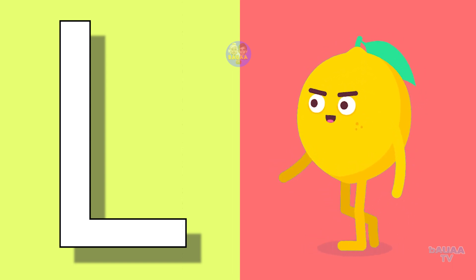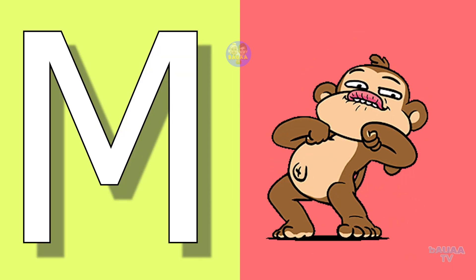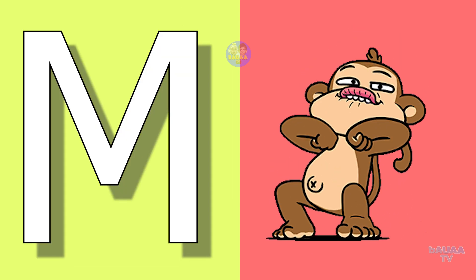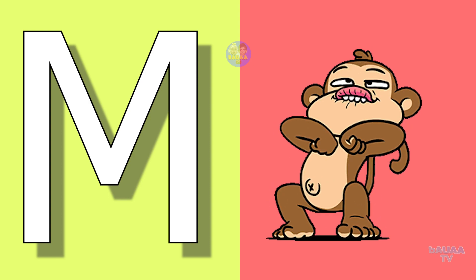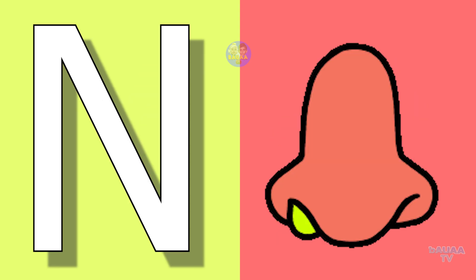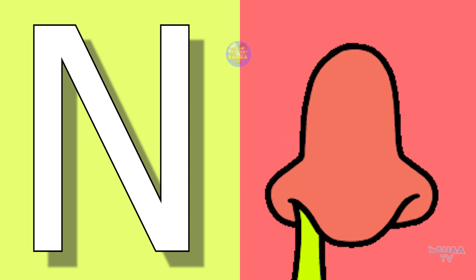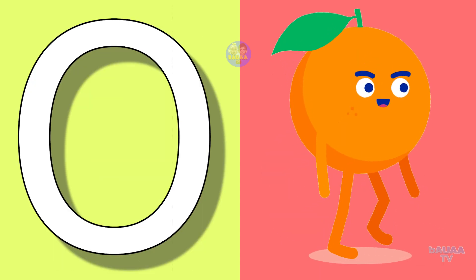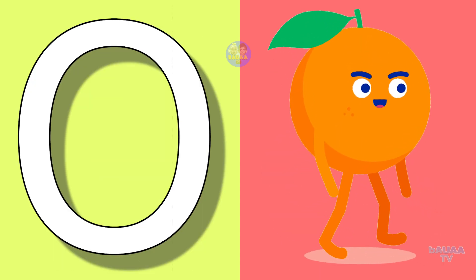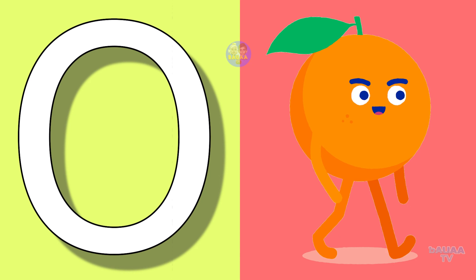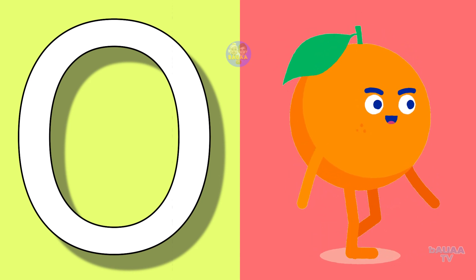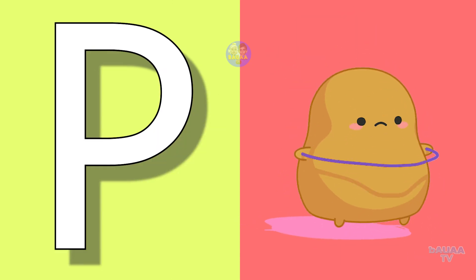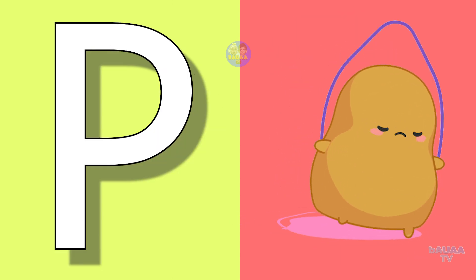L for lemon, lemon means nimbu. M for monkey, monkey means bandha. N for nose, nose means naak. O for orange, orange means santra.